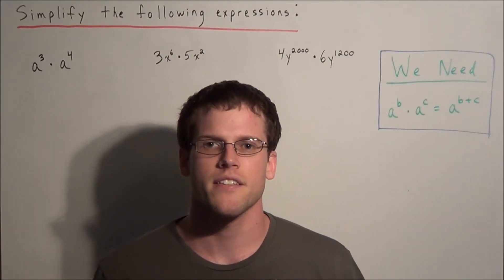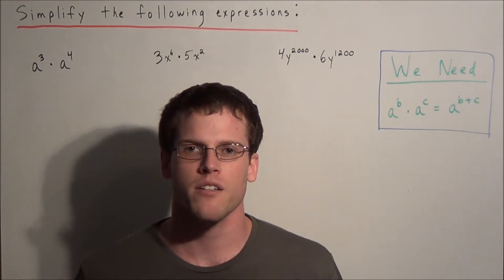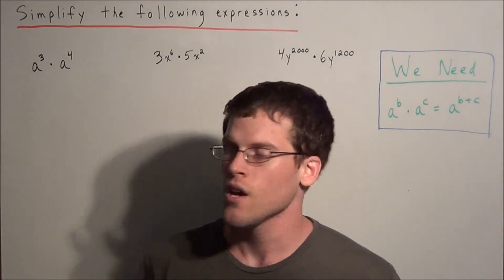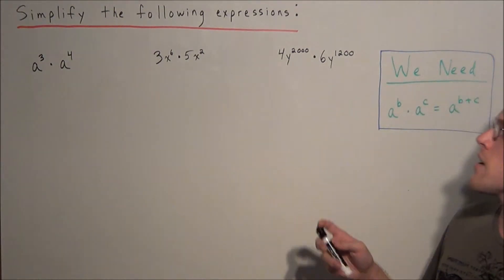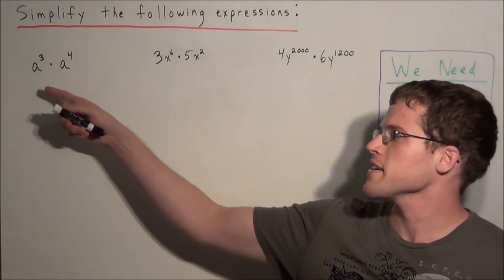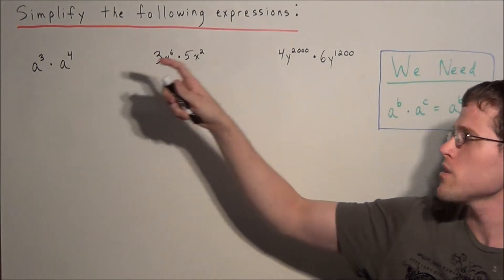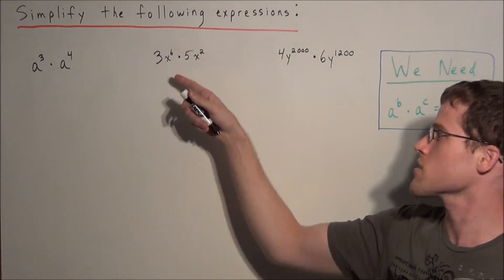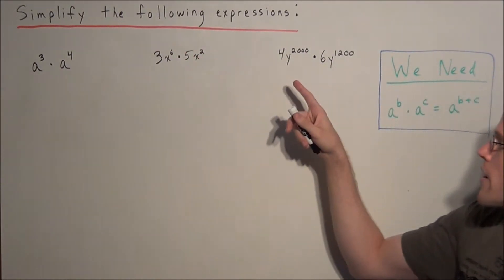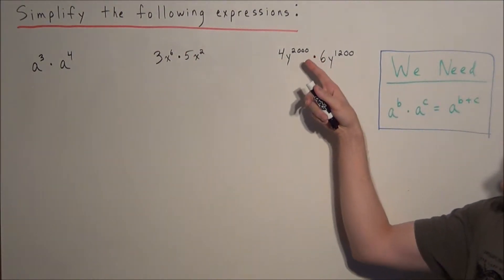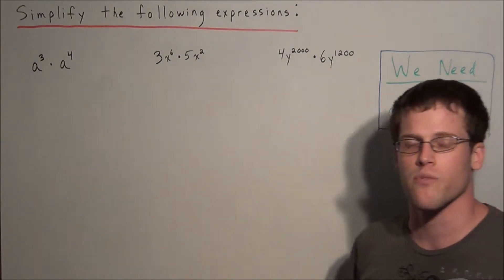Hi, my name is Vincent and today I want to take a look at the product of powers property for exponents. So we have to simplify the following expressions: a to the third times a to the fourth power, 3x to the sixth times 5x squared, and 4y to the 2,000 times 6y to the 1,200th power.